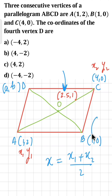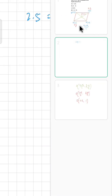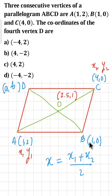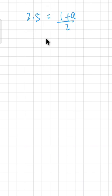From B we get x1 and from D we get x2. So x = 2.5. Writing: 2.5 = (x1 + x2)/2. Here x1 is the x-coordinate of B, which is 1, and x2 is 'a' (unknown). So 2.5 = (1 + a)/2. Multiplying both sides by 2: 5 = 1 + a. Therefore a = 5 − 1 = 4. So the x-coordinate of D is 4.